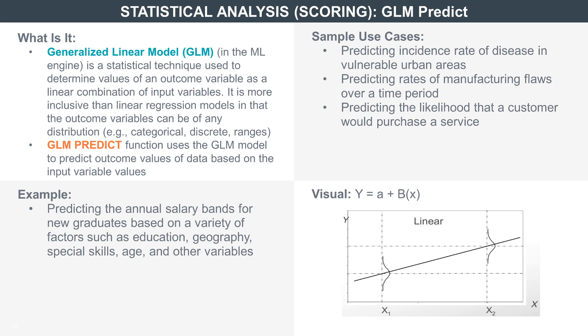But what happens if we are measuring the likelihood of a car purchase? In this case, we are looking not to predict a dollar value, but a probability. Given that the dependent and independent variables have different measurements but are still linearly related,